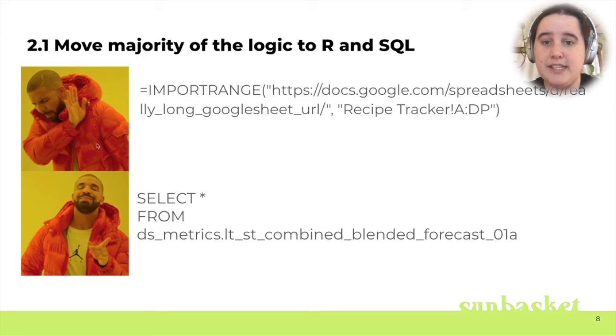Our first step to get this situation under control was to start moving the logic to R and SQL. In this version of the process, we had a handful of scripts that ran in sequence. Each of these scripts would read from Google sheets or a database table, do some basic manipulations, and then write back to another Google sheet or database table. The nice part was everything we did put into code was now under version control.